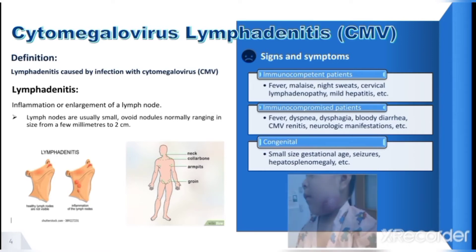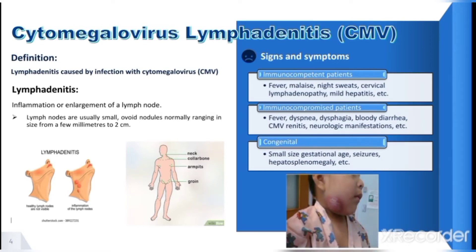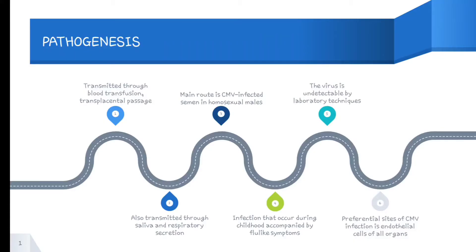Here is an example of CMV lymphadenitis features in a child. Regarding the pathogenesis of cytomegalovirus lymphadenitis, this virus can be transmitted through blood transfusion and transplacental passage, and also through saliva and respiratory secretions from person to person.